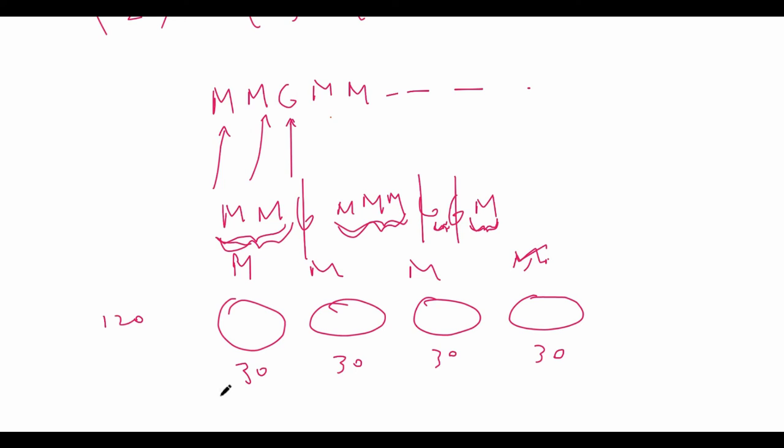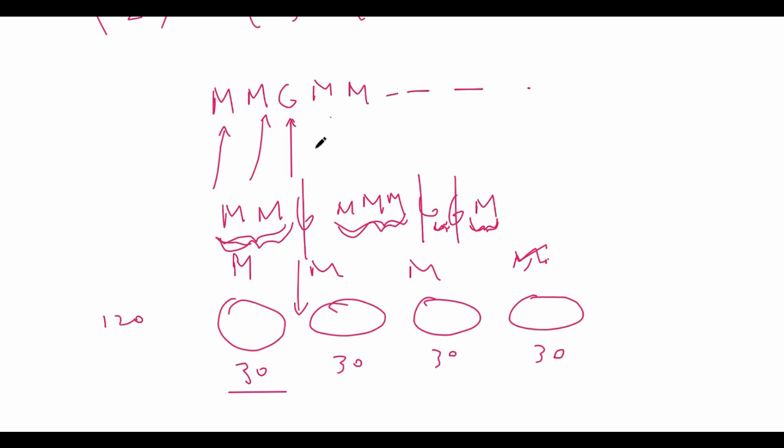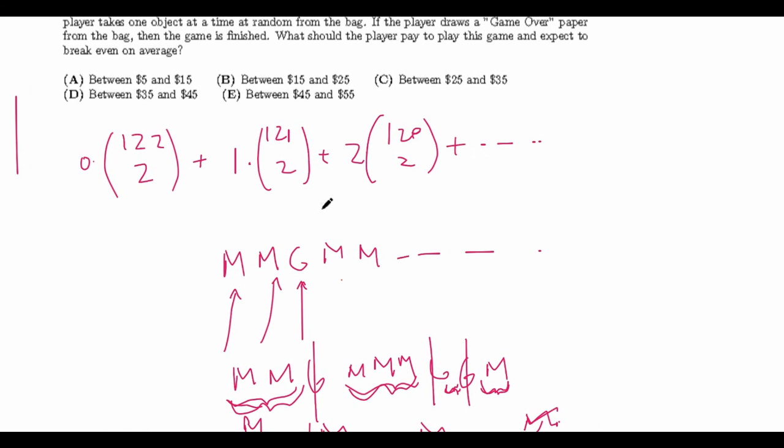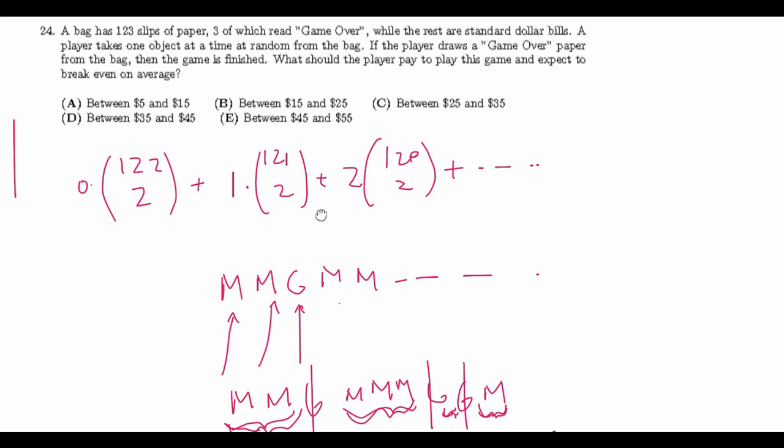So this means that the number of dollars we get on average before going to the first game over, in other words going to the first divider, in other words going to the next bag, is 30. So our answer is actually we don't actually have to consider any sort of range like the problem statement tells us. We actually have an exact answer of 30 dollars. So our final answer would be C between 25 dollars and 35 dollars.